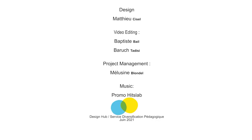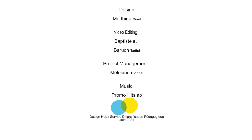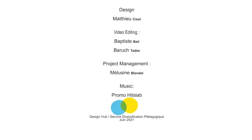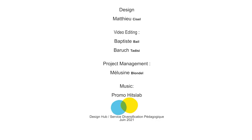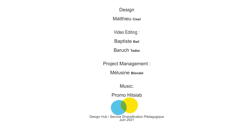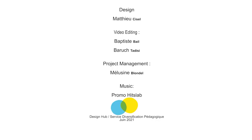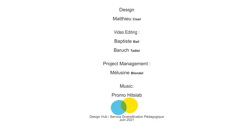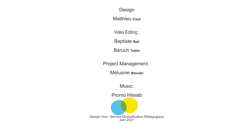Affirming the consequent is pretty easy to spot. I encourage you to dwell a bit more on propositional fallacies, and notably about denying the antecedent, which is pretty similar in structure, and gives you the opportunity to learn about other forms of arguments, such as modus tollens. Let's see that in another video.